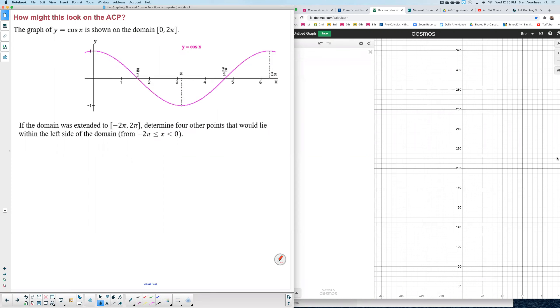Remember domain refers to the x values and so if you look at the x-axis it should go all the way to two pi. This says if the domain were extended to negative two pi to two pi, determine four other points that would lie within the left side of the domain, meaning from negative two pi to zero.